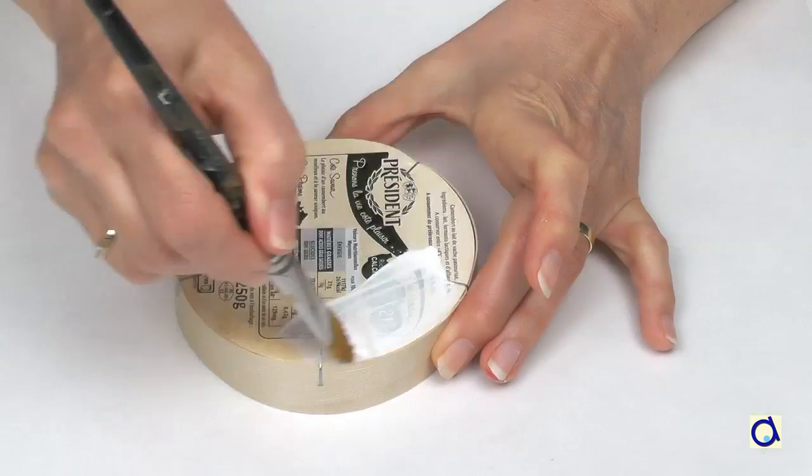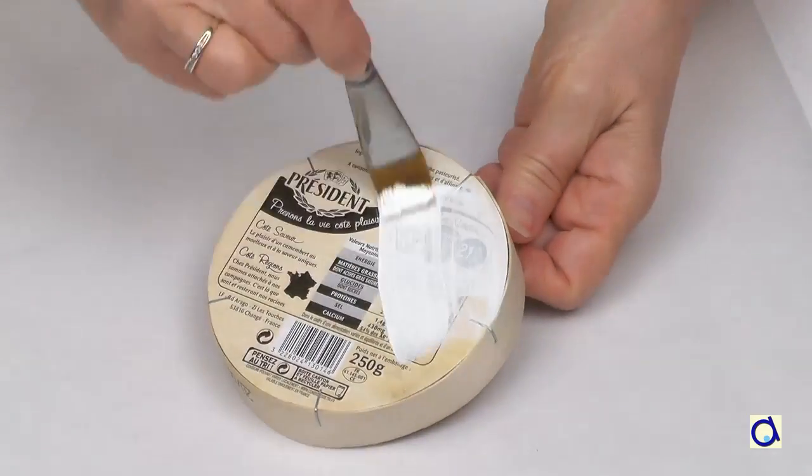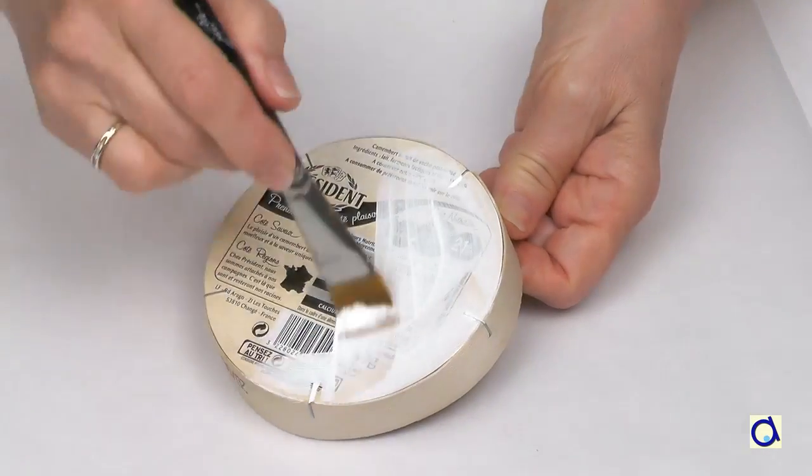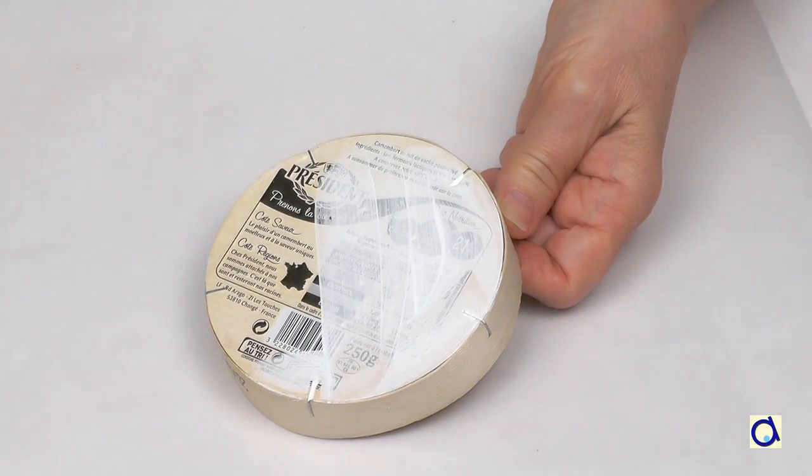Start by painting the flat top of the box white. You will need several coats of paint to completely hide the markings.